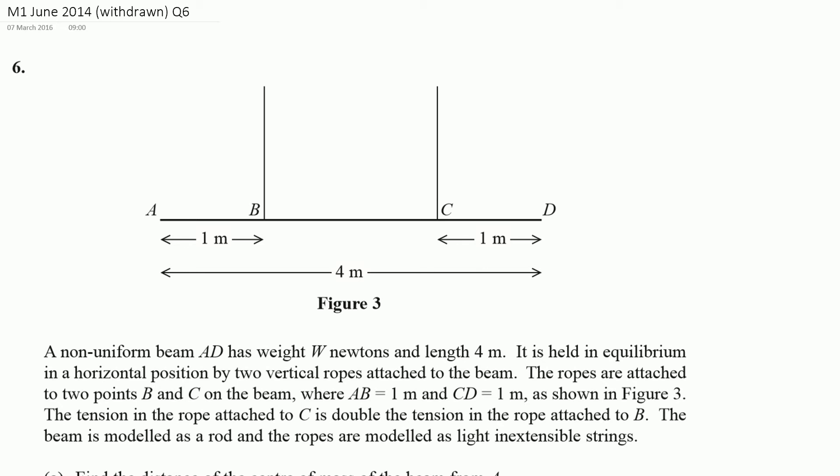Now we've got some important information here that can often cause confusion. The tension in the rope attached at C is double the tension in the rope attached at B. Now I often like to think of this as numbers to start with, so the tension in the rope attached at C, so the tension here, is going to be twice as big as the tension in the rope attached at B.